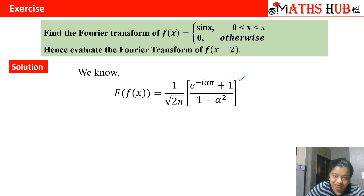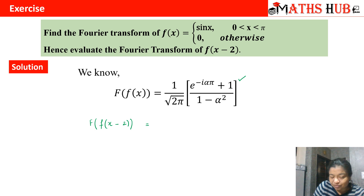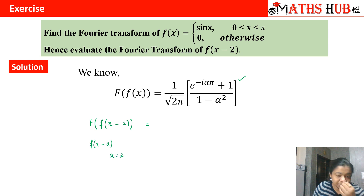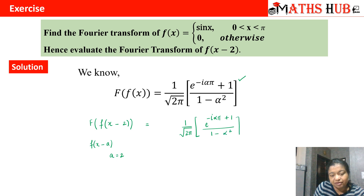Do watch my video on Fourier transform for this derivation. Now, the question asks for the Fourier transform of f(x − 2). The shift is from x to x − 2. Comparing f(x − 2) with f(x − a), we identify a = 2. So we write the Fourier transform as it is — (1/√(2π)) · (e^(−iαπ) + 1) / (1 − α²) — and multiply by the factor e^(−i · 2α).